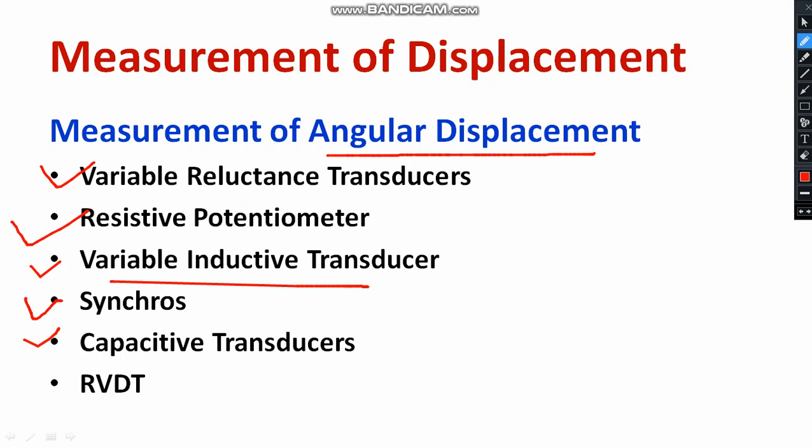Synchros is also a good choice for measuring angular displacement. You can also use capacitive transducers and rotary variable differential transducers, or RVDT, which is also a wise choice.